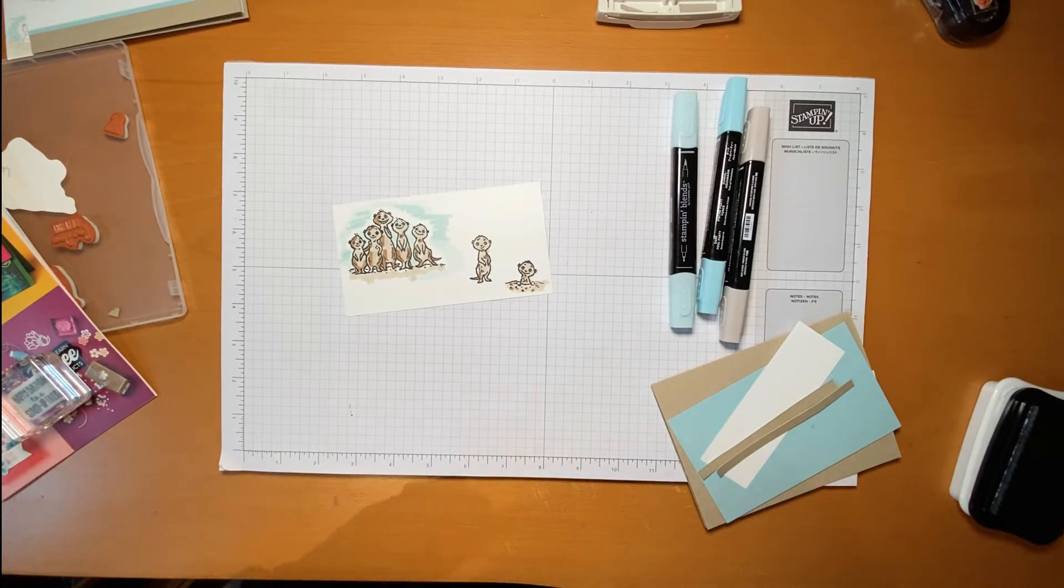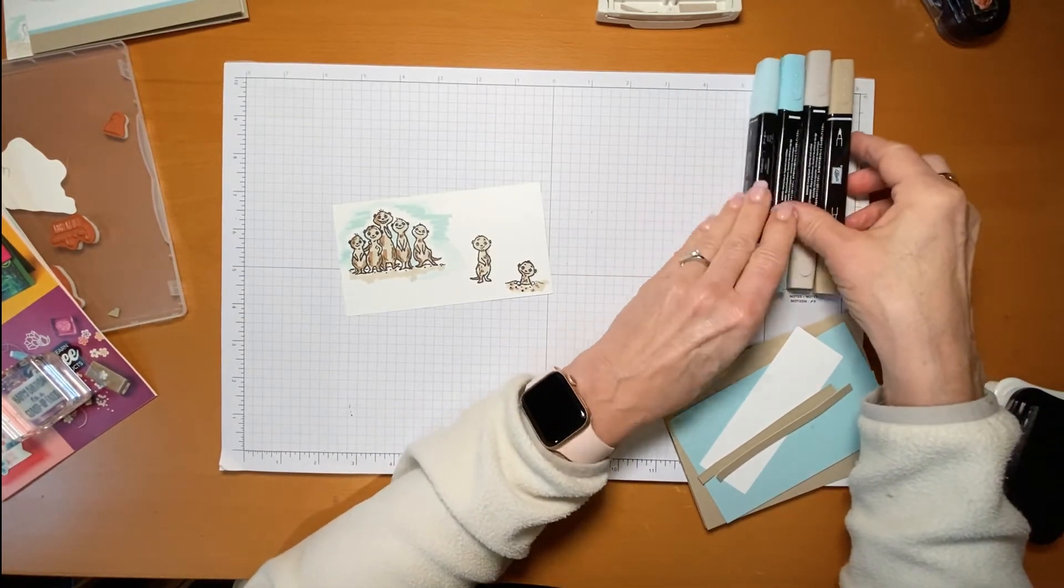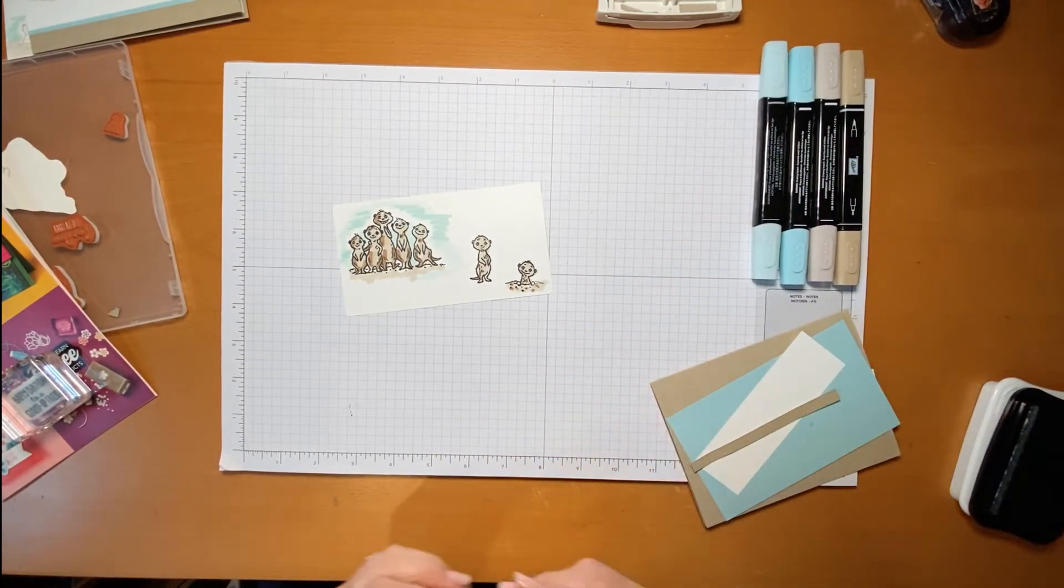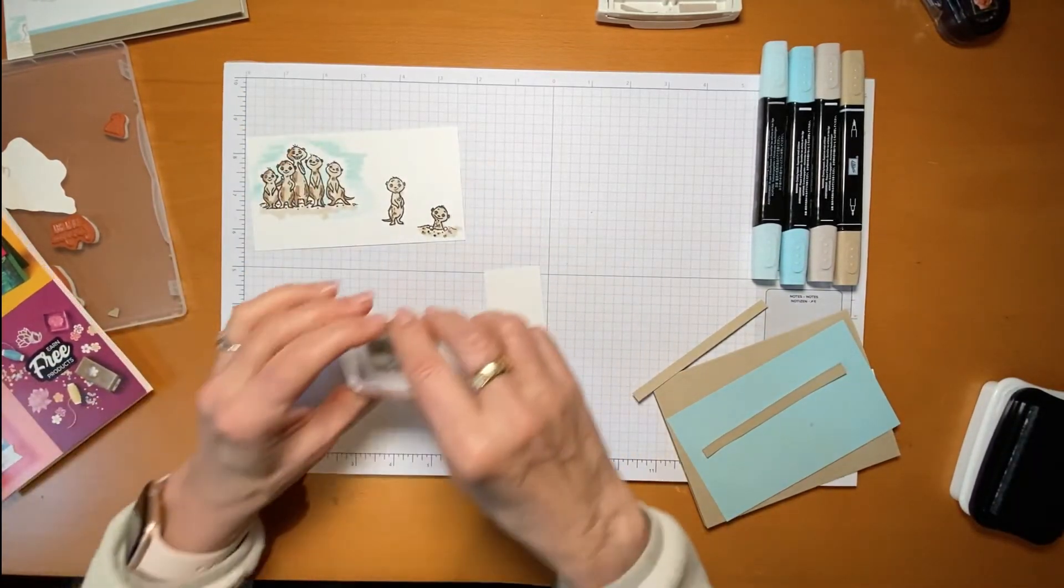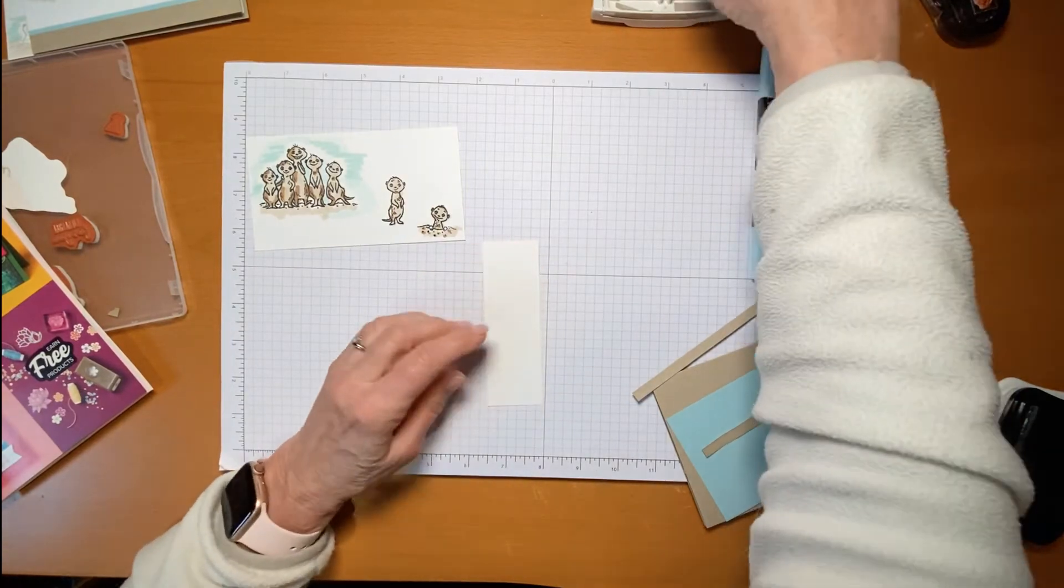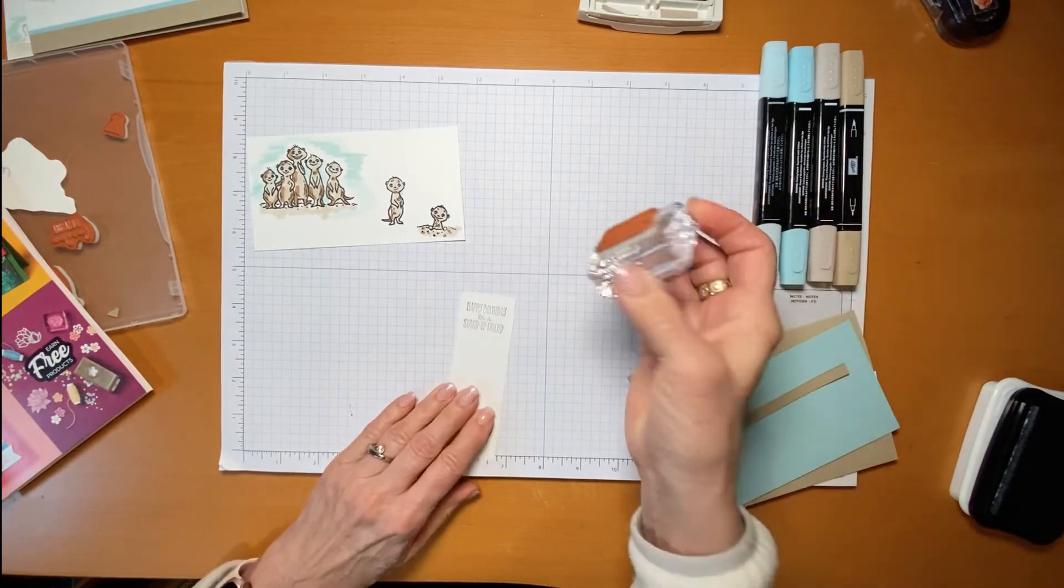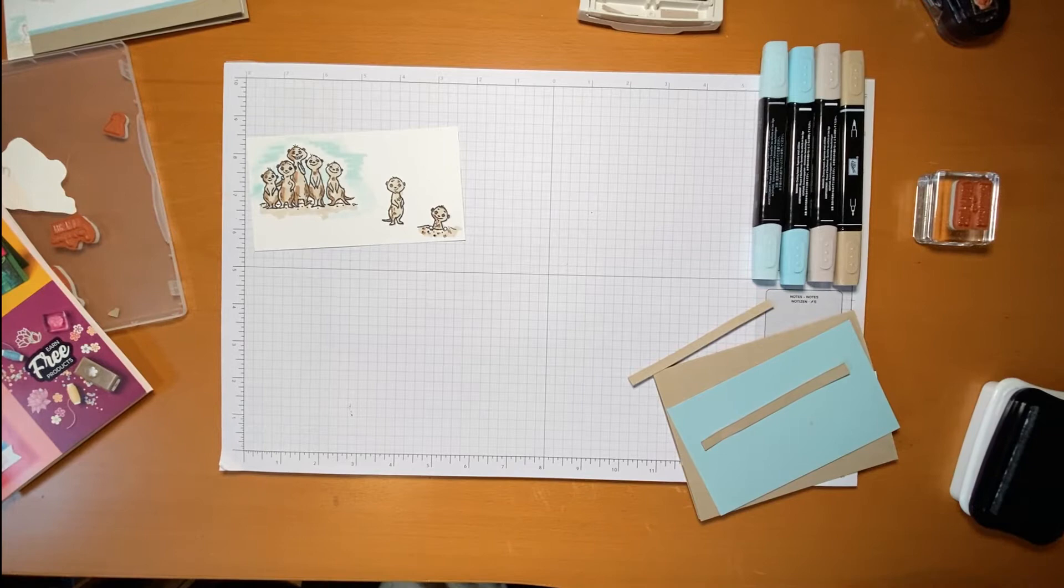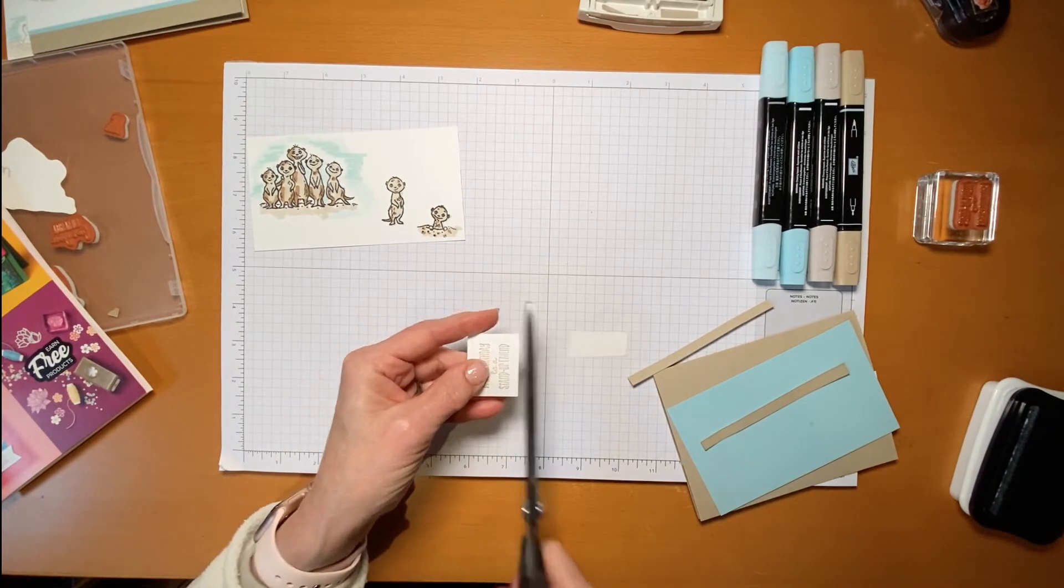Now, make sure you put the cap on when you close your Stampin' Blend so it doesn't dry out. It's alcohol-based, so it could dry really fast. So next part, I'm going to stamp the sentiment here. I've got Happy Birthday to a Stand-Up Guy in Crumb Cake. And this is just a leftover piece of cardstock of white, whisper white cardstock that I had. I'm just going to cut it with my scissors. There you go.